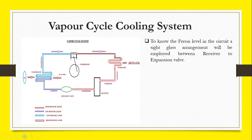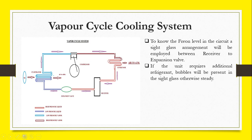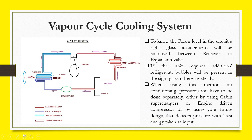To know the Freon level in a circuit, a sight glass arrangement will be employed between the receiver and the expansion valve. If the unit requires additional refrigerant, bubbles will be present in this sight glass, otherwise steady. When using this method of air conditioning, pressurization has to be done separately — either by using cabin superchargers, engine-driven compressor, or by using a feature design that delivers pressure with the least energy taken as input.